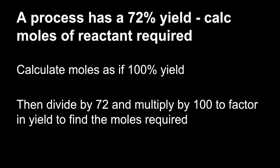If it's the other way around, a process has the same yield. Calculate the moles of reactant required. You're going to need to do the opposite, because you're going to need more. So again, calculate the moles as if 100% yield. But this time, divide by the 72, and multiply by the 100, and that would scale it up and factor in the yield.